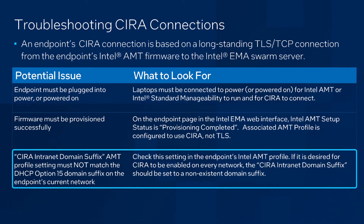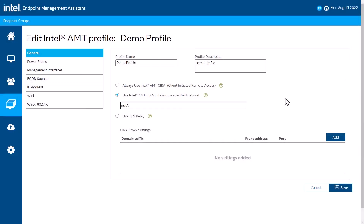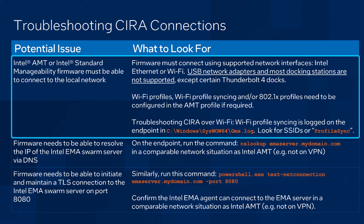Note that in versions of EMMA prior to 1.8, this was called the CIRA intranet domain suffix setting, and to get behavior equivalent to the 'always use Intel AMT CIRA' setting, the best approach was to set a non-existent domain suffix in that field. Next, the Intel AMT or ISM firmware must be able to connect to the local network. This means its network connection must use supported interfaces — that could be an Intel wired Ethernet adapter or a properly configured Intel Wi-Fi adapter. Connections via USB network adapters and most docking stations are not supported, except for certain Thunderbolt 4 docks engineered for Intel vPro support. If Wi-Fi or 802.1X is needed to connect to the local network, appropriate configuration must be set in the endpoint's AMT profile.